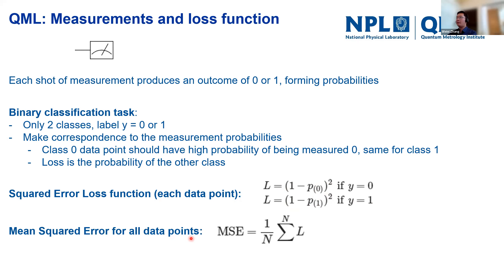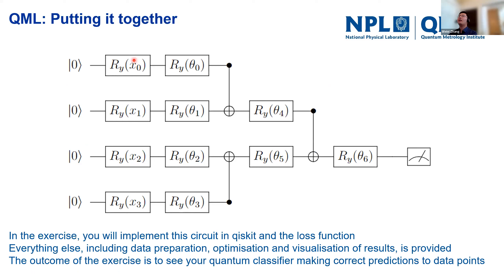We take the square of the loss to penalize larger errors. Summing over all data points and taking the mean gives us the mean squared error. Many other loss functions exist, but here we focus on this one. Putting it all together: we start with zero states, apply RY gates for data encoding of rescaled classical features, apply the tree tensor network classifier, then measure the second qubit to calculate the loss.